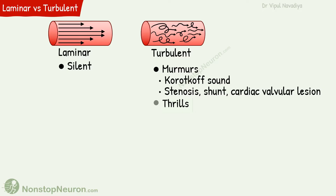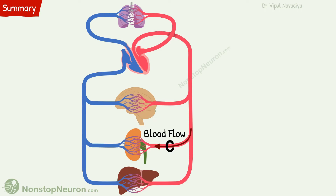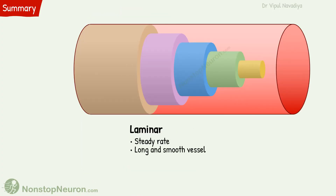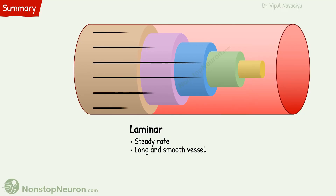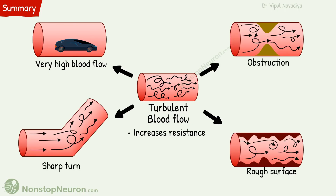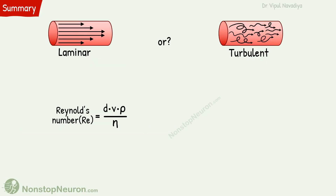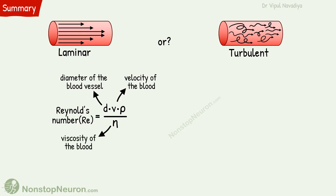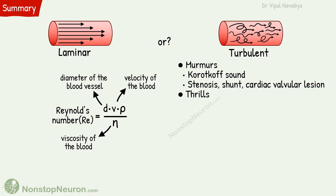This was all about the blood flow. Let's have a quick summary. Blood flow is a quantity of blood that passes a given point in the circulation in unit time. Laminar blood flow is seen when blood flows at a steady rate through a long and smooth blood vessel, where velocity increases from the vessel wall to the center. Turbulent flow occurs in case of very high blood flow, obstruction in a vessel, sharp turn, and rough surface. Reynolds number is a measure of the tendency of turbulence to occur. Large diameter and high velocity in high cardiac output conditions tend to cause turbulence, whereas viscosity of the blood tends to prevent it. Murmurs produced by turbulence are important in measuring blood pressure and in diagnosis of conditions like vessel stenosis, shunts, and cardiac valvular lesions.